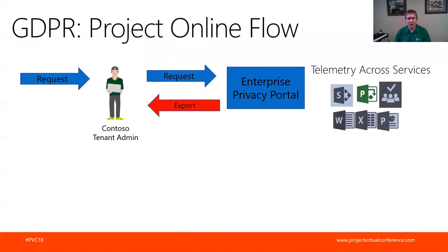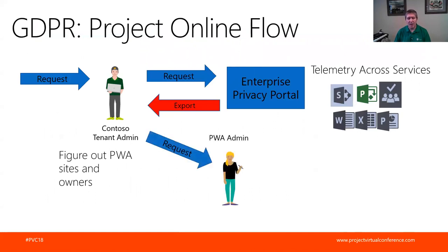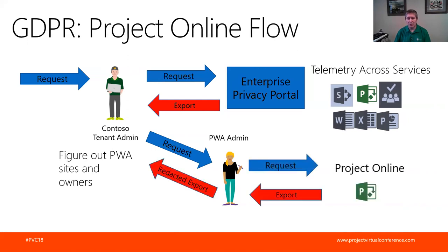For Project Online, there's a very similar flow. A request comes into the Contoso tenant admin, who does the general stuff via the enterprise privacy portal. The admin then needs to figure out the PWA sites and owners affected by that particular request - there's a command that will tell you all your PWA sites. You then have to go to your PWA admin and give them a request to find out all the information from the PWAs about that particular resource. Some PowerShell commands are run against Project Online, which creates a lot of export files. Those export files are then redacted and passed back through the tenant admin to the person who requested the data.